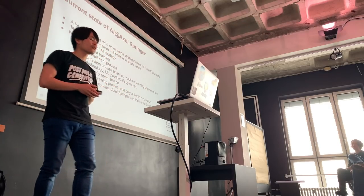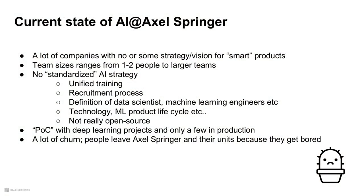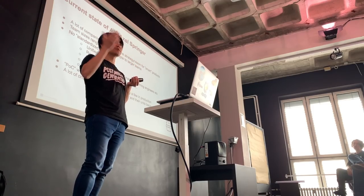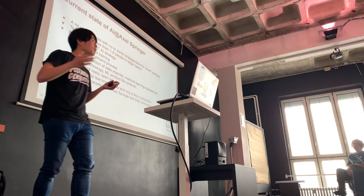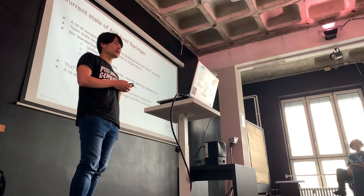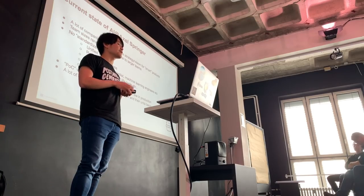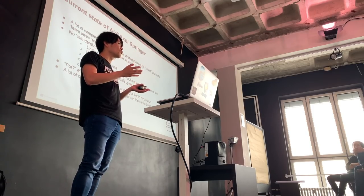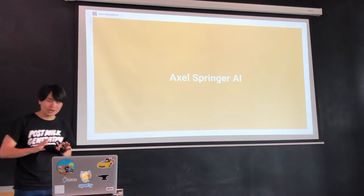Technology is also not unified at the moment — some units are very advanced with deep learning, some are not. Open source also has no overall strategy: some companies are doing it, some not, some don't have time, some are too small. It's not really a mess per se — a lot of Axel Springer companies were acquired into this bigger corporation, and that's just how it is. We also have a lot of churn; over the last two years I've seen many people leaving across all units.